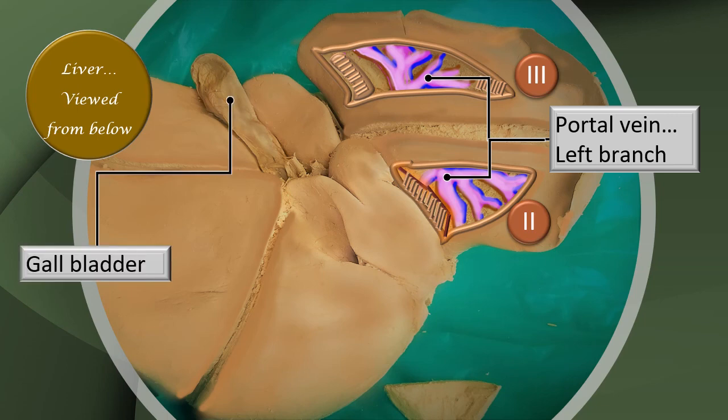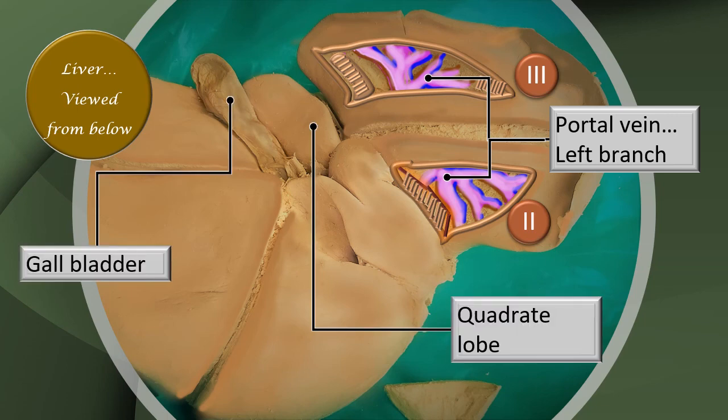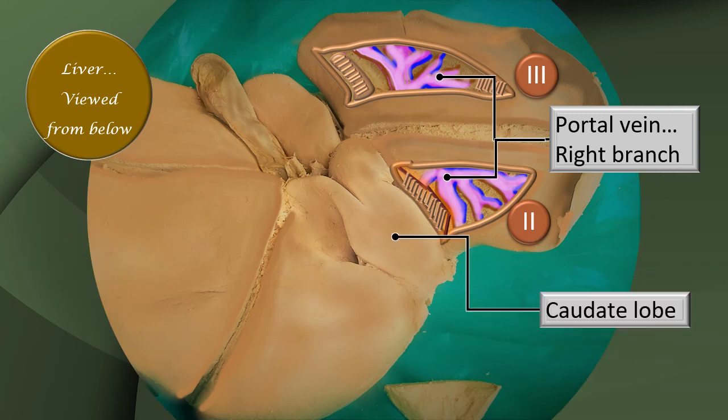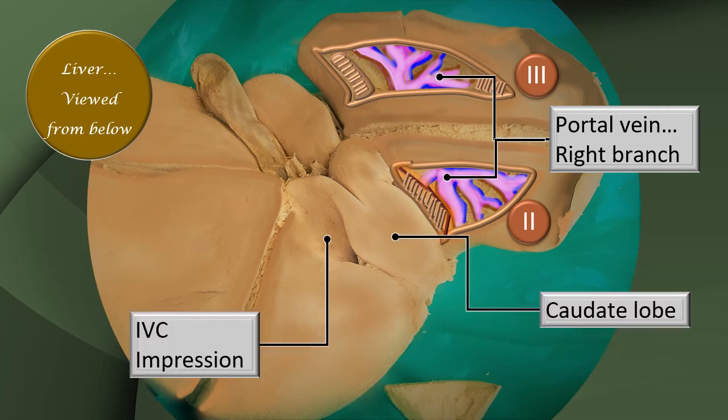These are all supplementary labels to help you with orientation. The quadrate lobe, the caudate lobe, and the gallbladder are important landmarks by which you can remember the segmental association. The IVC impression — all these help you locate the lobe or the segment better.